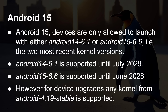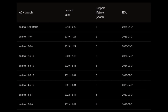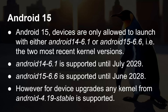The important thing is that Android 15 devices are only allowed to launch — and the keyword here is launch — with either Android 14 6.1 or Android 15 6.6 kernels, meaning the two most recent kernels. That means Android 14 6.1 is supported until 2029, and Android 15 6.6 is supported until 2028. However, that's only for launching new devices. Devices receiving an OS upgrade — released a year or two ago — can use any kernel from Android 14.19 stable, which goes back to a kernel launched in 2018 and still supported until 2025.